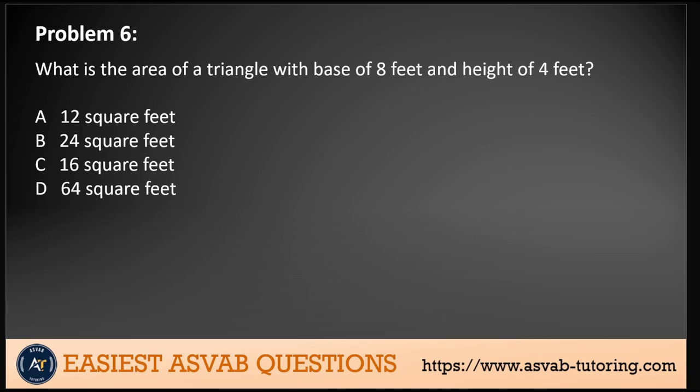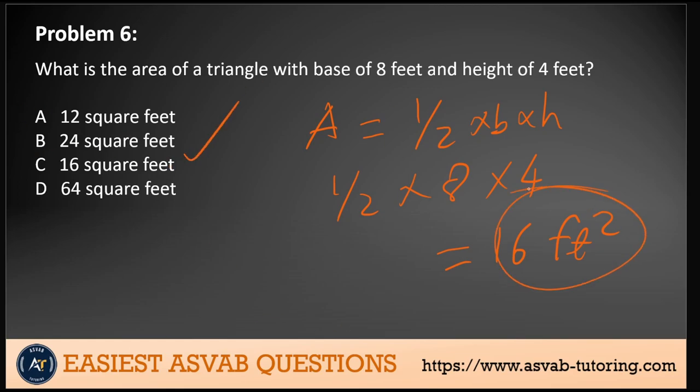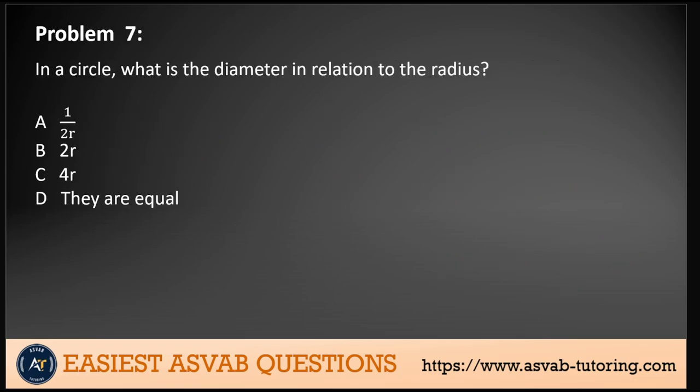Problem 6: What is the area of a triangle with a base of 8 feet and a height of 4 feet? The area of a triangle is one-half times base times height. So we have one-half times 8 times 4, which gives us 16 square feet. There is our answer.